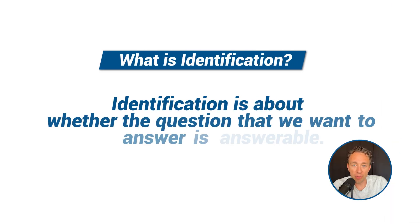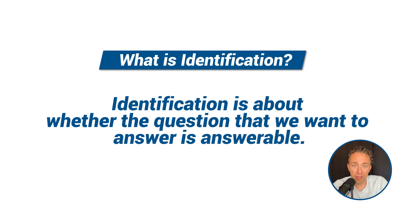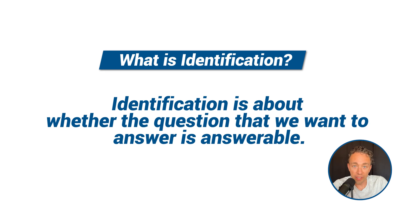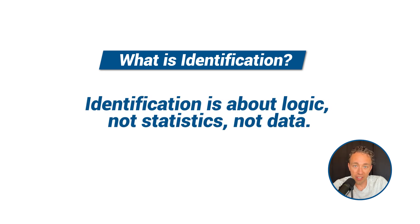Hopefully this helps you see that the spectrum of structural estimation is actually a spectrum, and that the fundamental problem underpinning it is identification. No matter what econometric method or approach we're taking, we still have to solve this identification problem. To review: identification is about whether the question we want to answer is answerable given what we can observe in the population and what we're willing to assume. Identification is about logic, not statistics, not data. Whether you're running an RCT or estimating a general equilibrium model, identification is what unifies all these methods and distinguishes econometrics from statistics.